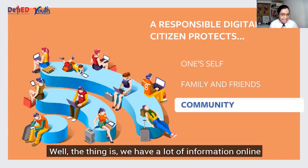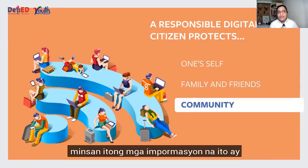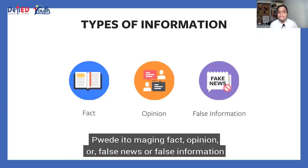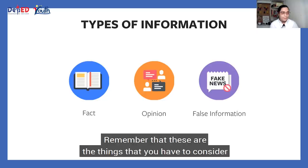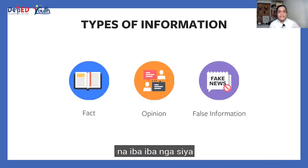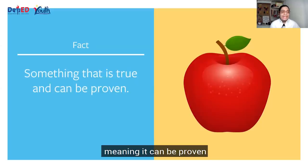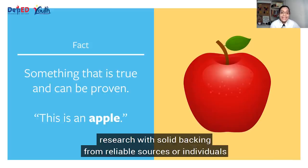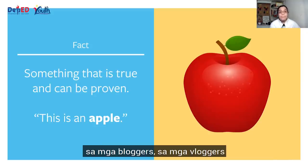How do we protect our community? We have a lot of information online and these informations are something that we share. At ang importante nating malaman dito ay may iba't-ibang klase na informasyon. Pwede ito maging fact, opinion, or false news or false information. So these are the different types of information. As much as we like to share information that we see online, remember that we have to consider that iba-iba nga siya. Fact is basically something that is true, meaning it can be proven — ito yung mga bagay na based sa evidence, research with solid backing from reliable sources or individuals. Hindi po ito based sa TikTok, hindi rin po ito based sa mga fake news peddlers, mga bloggers, vloggers.